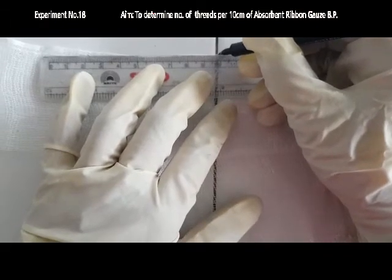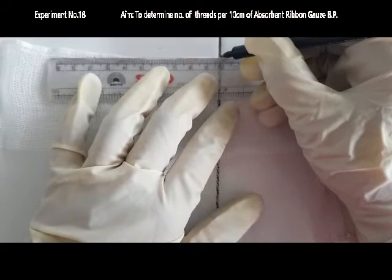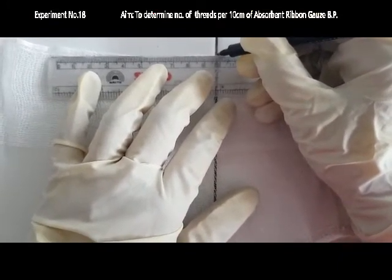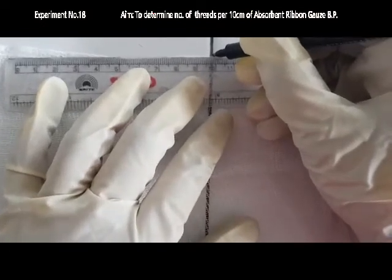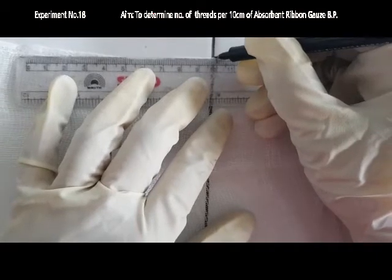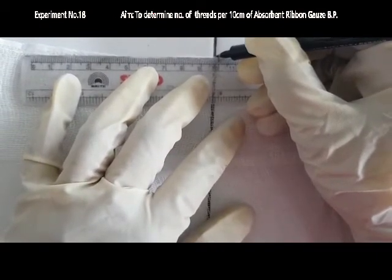Here we are using the same absorbent ribbon gauge from experiment number 19. Now take exactly 10 cm of absorbent cotton ribbon gauge length.